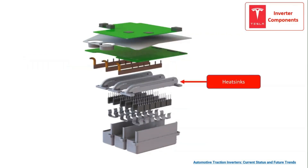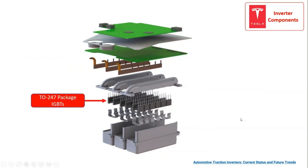Then, we have the heatsinks that enhance the heat dissipated from the IGBTs. The 36 IGBTs are attached to the heatsinks and connected to the PCB through the busbars. The IGBTs are based on the 2247 package, which is a three-lead through-hole device with a metal plate for a heatsink.